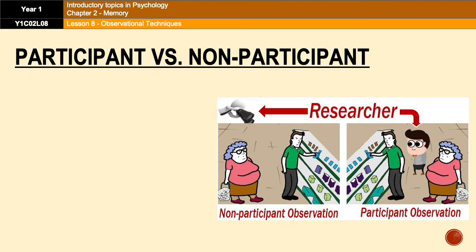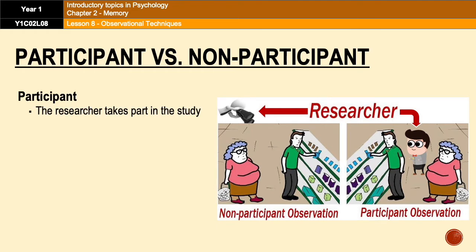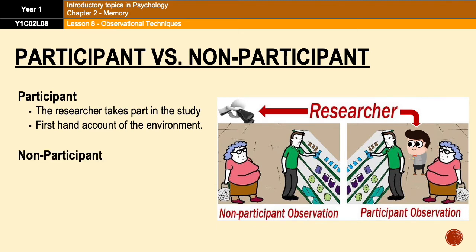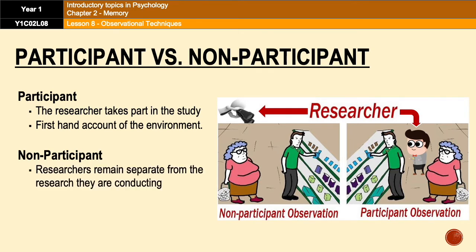Finally, we have participant versus non-participant observations. This means either the researcher is taking part in the study or is watching from the sidelines. For example, our management and workforce study might be improved if the researcher actually joins the workforce to produce a first-hand account of what they're studying. However, in a non-participant observation the researcher remains separate from those they're studying and records behavior in a more objective way.